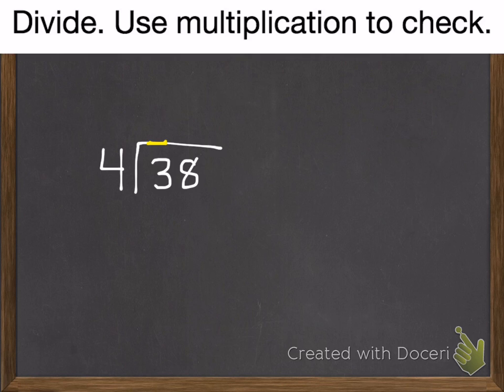Okay, we can't go into our 10s. There's only 3. We need at least 4. So there are 9 4s in 38. We'd give out 36, which leaves us with 2. So 9, remainder 2.